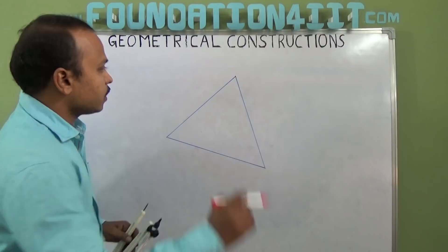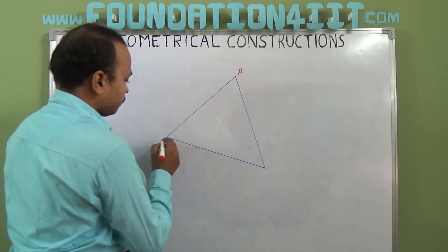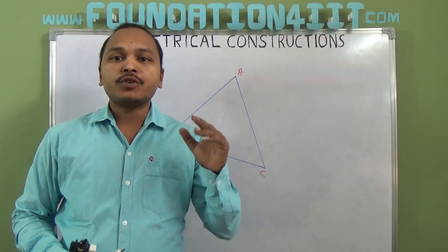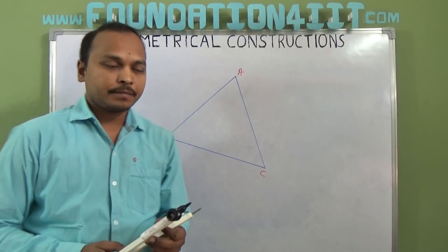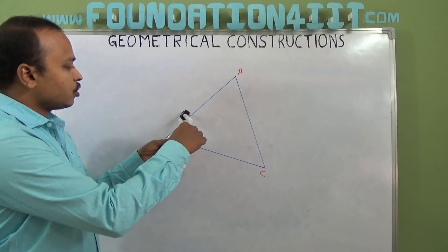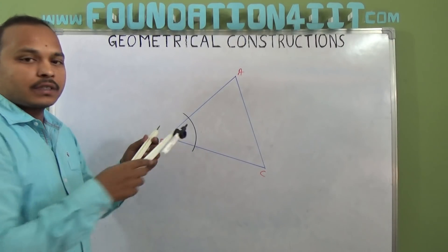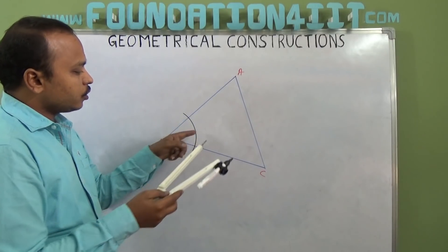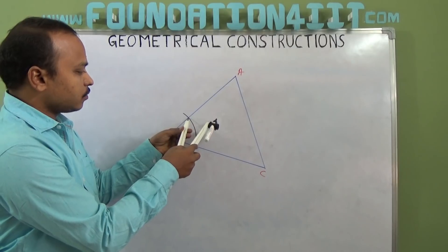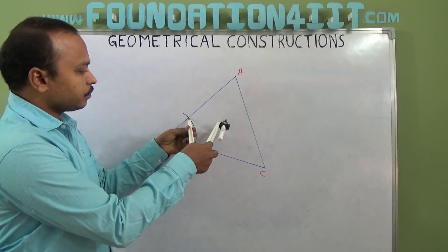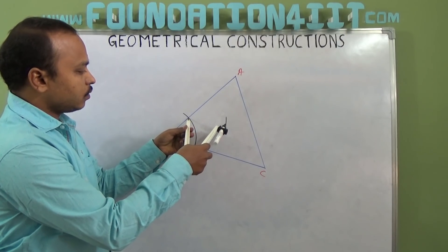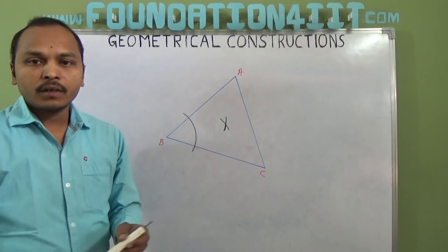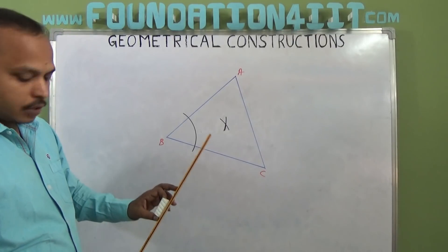This triangle is ABC. We need to bisect any two angles — angle A, angle B, or angle C. For bisecting an angle, first draw an arc with some radius. Then, from the intersection points, cut two arcs on one side, and from the other intersection point using the same radius, extend to bisect the angle.